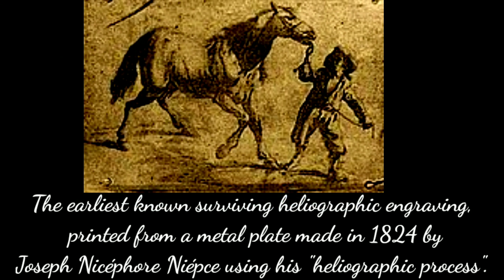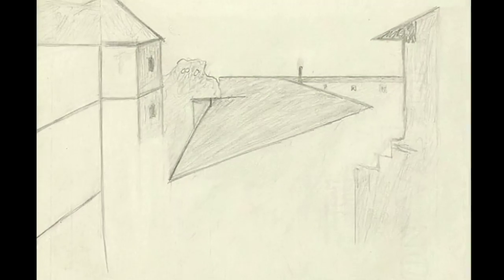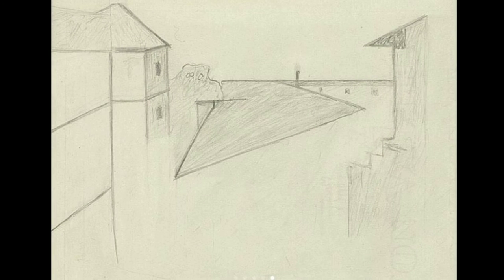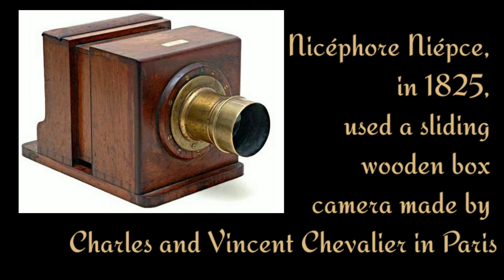Niépce's first real success using bitumen to create a permanent photograph of a camera obscura image came in 1824. That photograph, made on a lithographic stone surface, later disappeared. In 1826 or 1827, he photographed the same scene — the view from a window in his house — on a sheet of bitumen-coated pewter. That result has survived and is now the oldest known camera photograph still in existence.